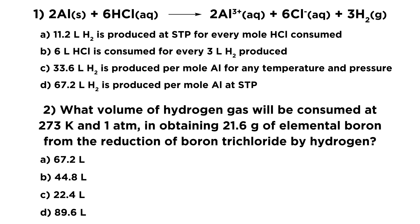And the second question asks, what volume of hydrogen gas will be consumed at 273 Kelvin and 1 atmosphere in obtaining 21.6 grams of elemental boron from the reduction of boron trichloride by hydrogen? Again, we're going to need to know about stoichiometry as well as ideal gases, and we will have to be able to write out that equation. Check out a few tutorials if you need help, and when you're ready, give this a try.